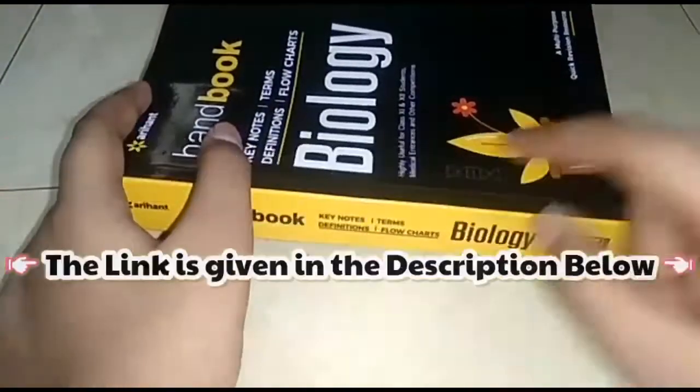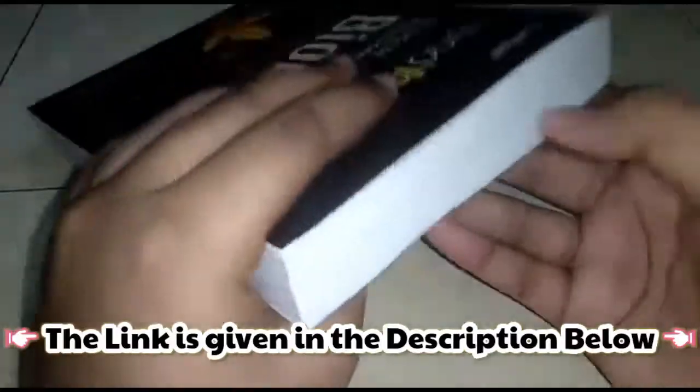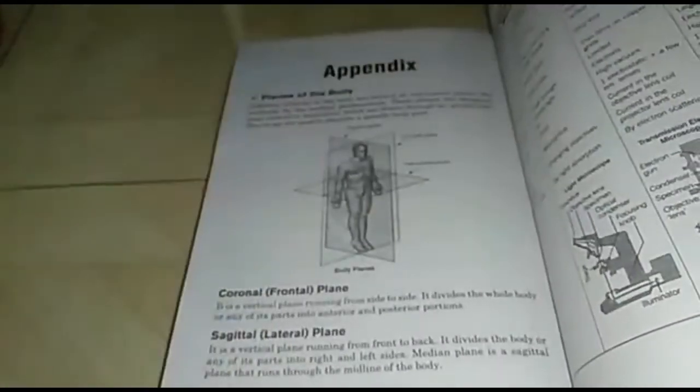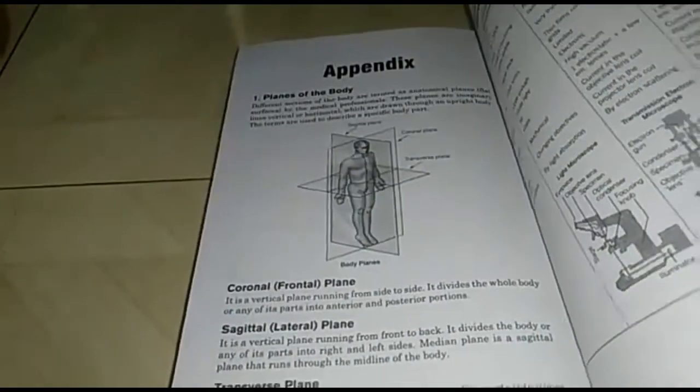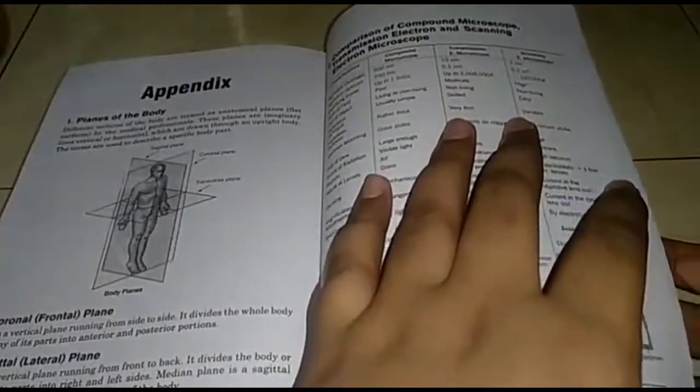I bought this book from Amazon. If you want to buy this book, the link is given in the description. Now let's go to the appendix at the last pages of this book. On the first page of the appendix, we have how to identify anatomical planes — coronal, sagittal, and transverse — and we have some comparisons of microscopes, and some important plant products.